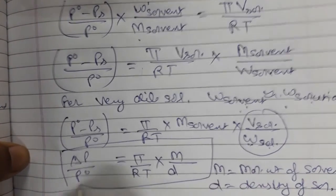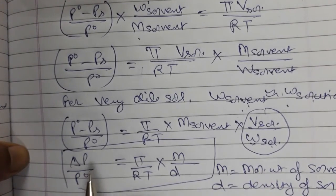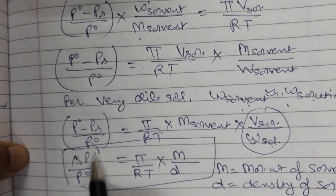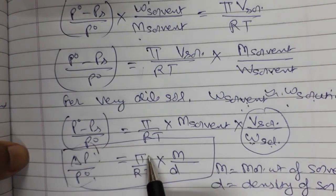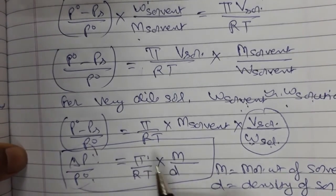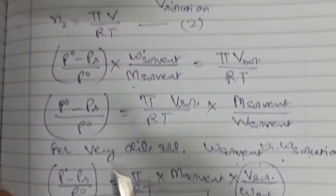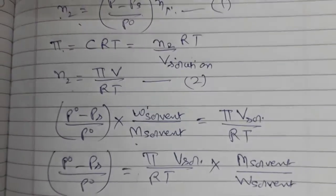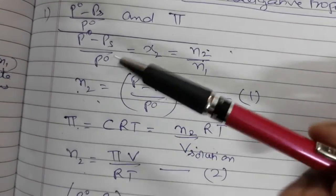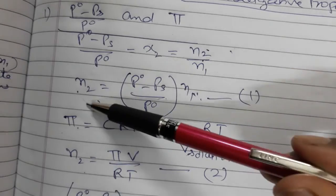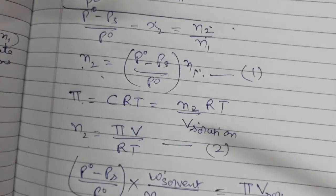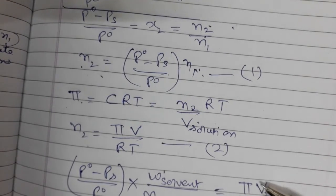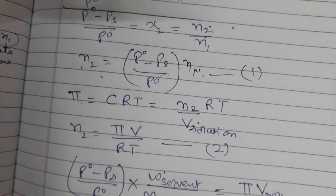So this is the relation between two colligative properties: relative lowering in vapor pressure and osmotic pressure. To find the relation between any two colligative properties, we find the value of n2 from each property and equate the two values.